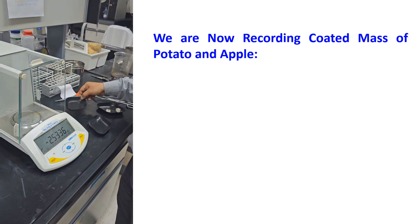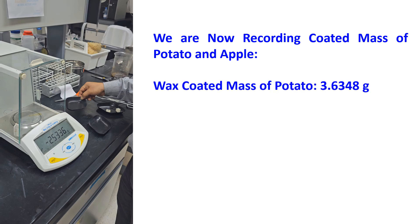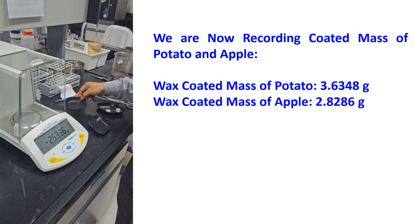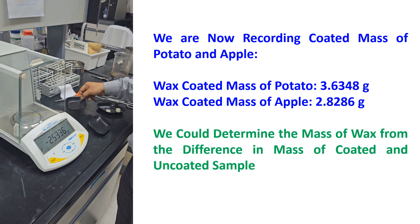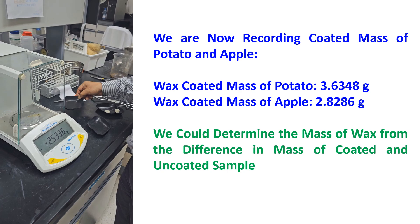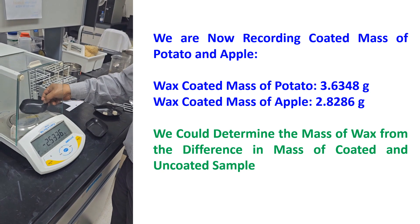We are now recording the coated mass of potatoes and apples. Wax-coated mass of potato is 3.6348 grams. Wax-coated mass of apple is 2.8286 grams. We can determine the mass of wax from the difference in mass of the coated and uncoated sample.